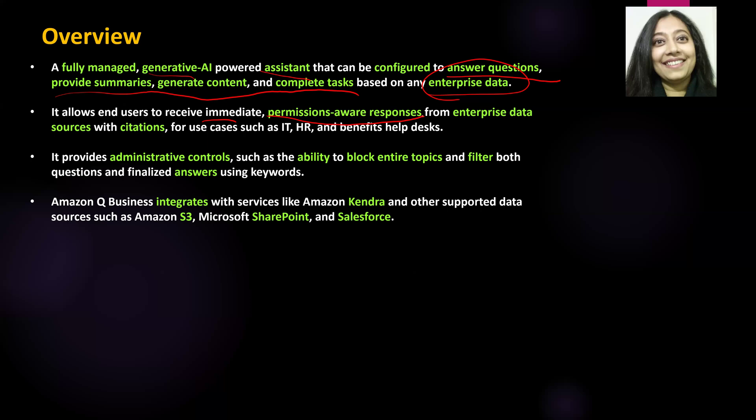When your end users interact with Amazon Q Business, the response generated is going to be permission-aware — and this is across different enterprise data sources. It could be used by different departments like IT, HR, help desk, or any other department. For example, a team with a ton of documents could upload them to an S3 bucket, use Amazon Q Business to answer questions, provide summaries, or even generate some content using all of that content.